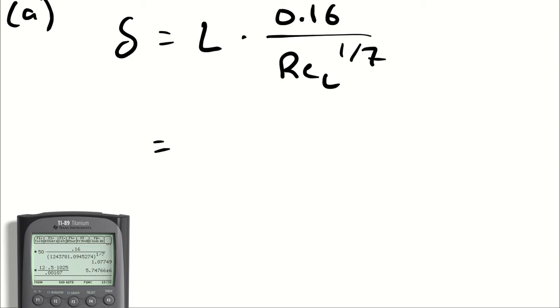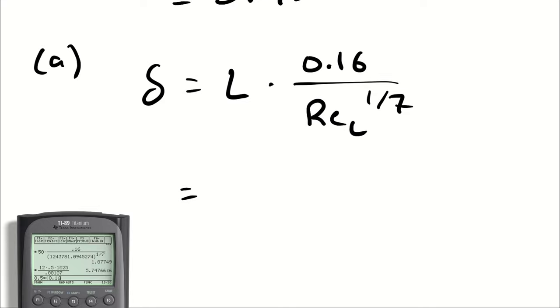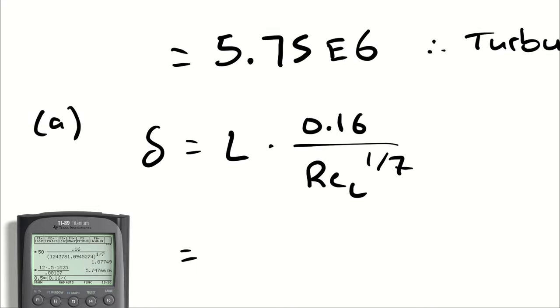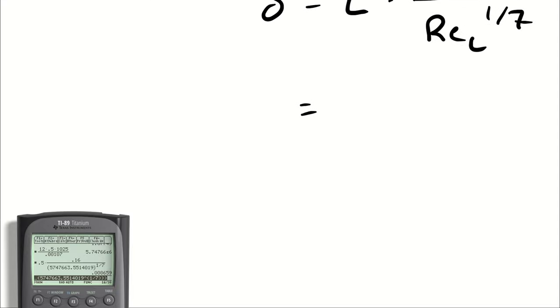If I plug in meters I will get out meters, which is probably way too big but we'll cross that bridge when we get to it. 0.5 times 0.16 divided by our Reynolds number to the 1/7th power, and we get 0.00866.